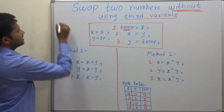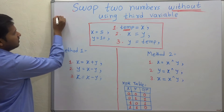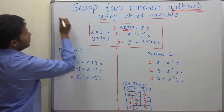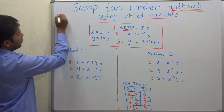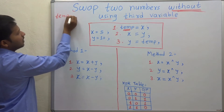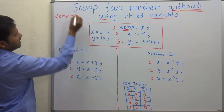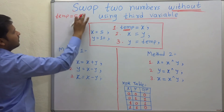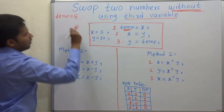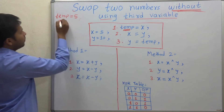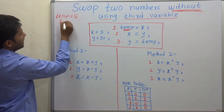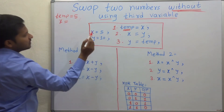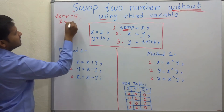Let's execute this method. What is the first statement? Temp is equal to x. So temp is equal to x — what is the value of x? Value of x is 5. Now x is equal to y — the second statement, x is equal to y. So what is the value of y? That is 10.